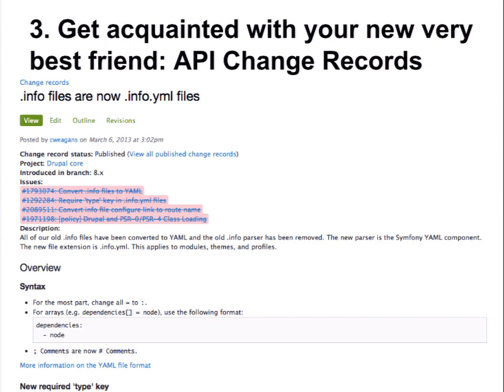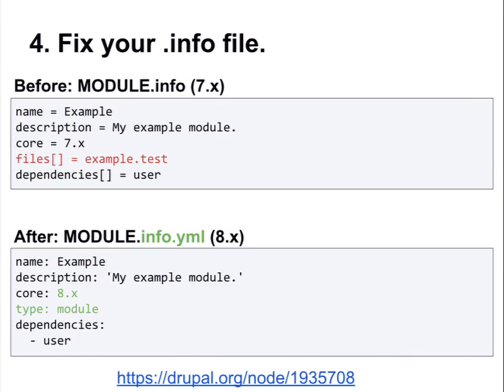So if you were to go to this page and type '.info', for example, you would see in the list that info files are now info.yaml files, and that that is what your problem is. It won't pick it up because one of the things we've done in Drupal 8 is move away from Drupal-specific info file syntax — kind of INI but not really — and move that over to YAML, which is a standard metadata language. You basically just turn all your equal signs into colons, and in the case of arrays, indent them with a dash.